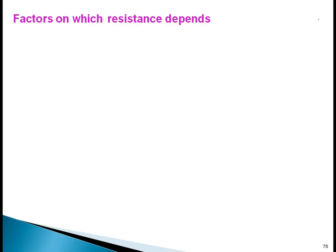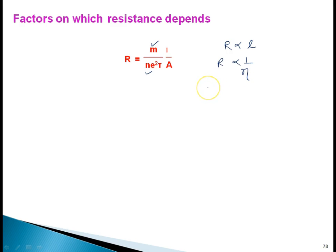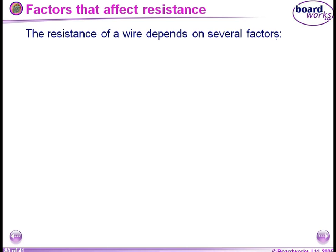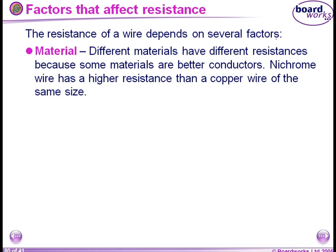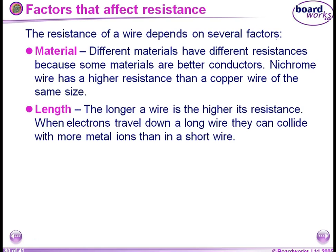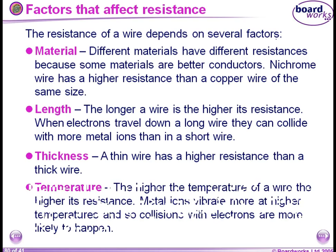The factors on which resistance depends: from the formula, the mass of the electron is constant. Resistance depends on length, on N (the number of free electrons per unit volume — different materials have different numbers of electrons), and on tau (relaxation time, which depends on temperature). So resistance also depends on temperature. R is proportional to 1 by A. The four factors are: material, length, thickness, and temperature.